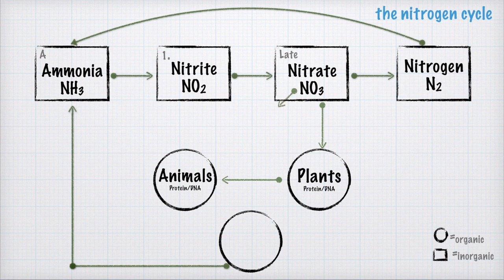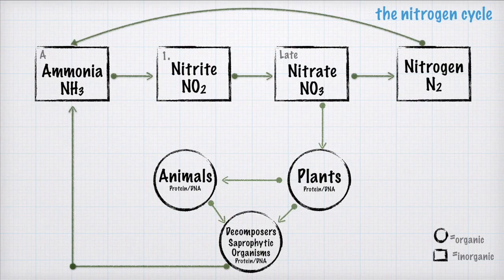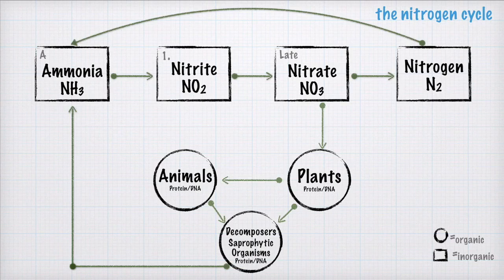All good things must come to an end, and of course organic organisms die. When they do, they leave behind their nitrogen, which doesn't go unnoticed. We have a group called decomposers — saprophytic organisms — mostly bacteria and fungi, that take advantage of anything that dies and break all of the compounds down to their most simplest form. They're really good at recycling nitrogen.